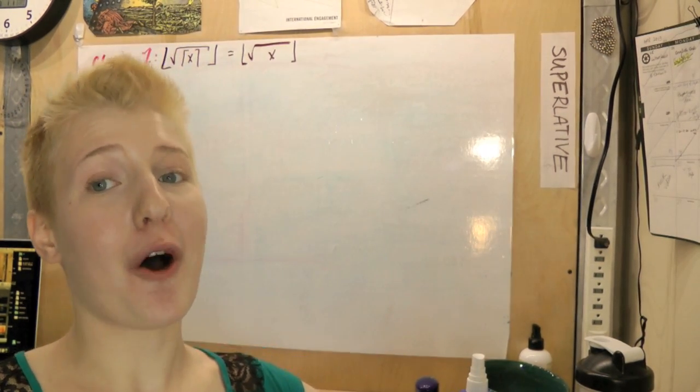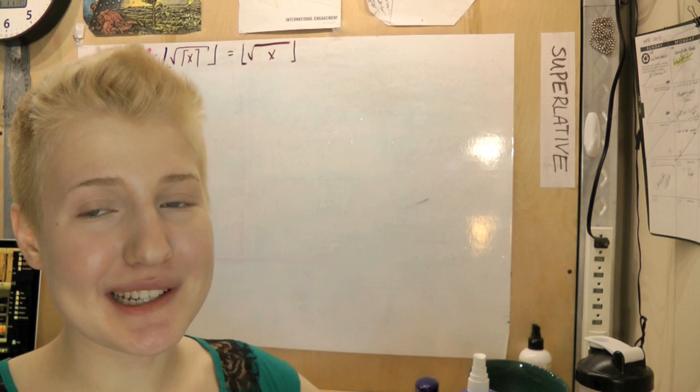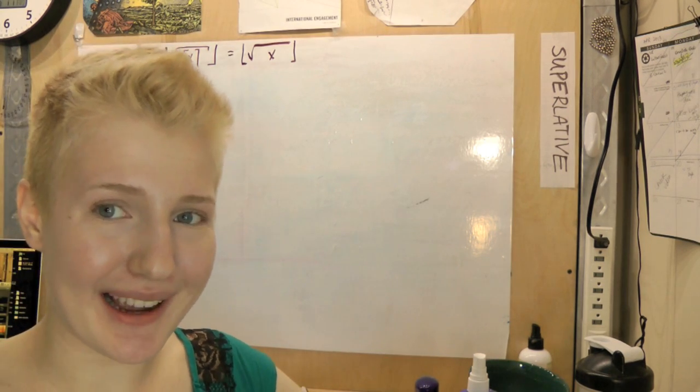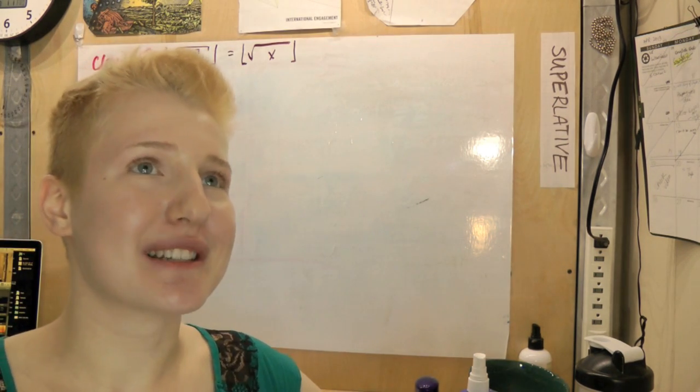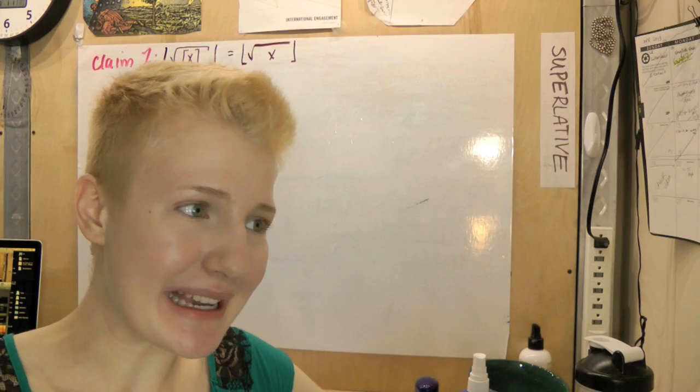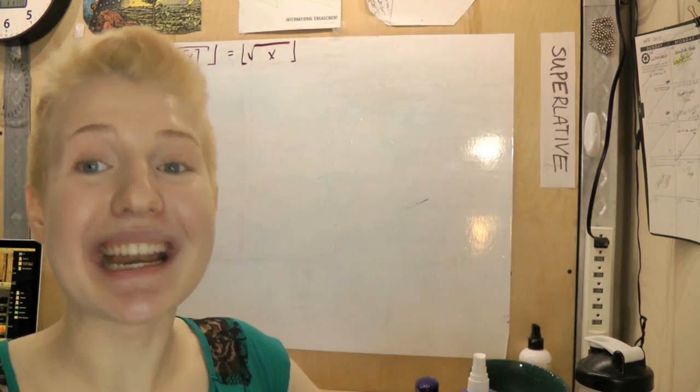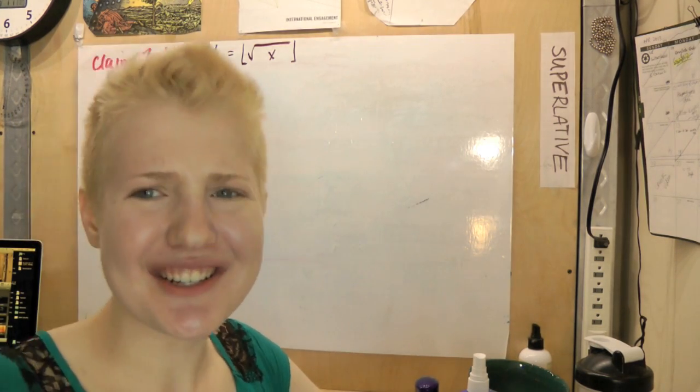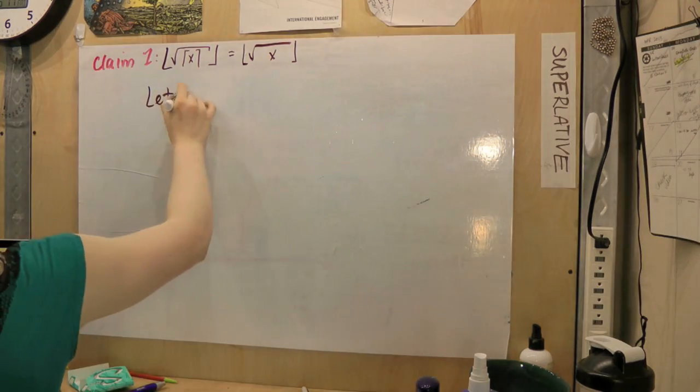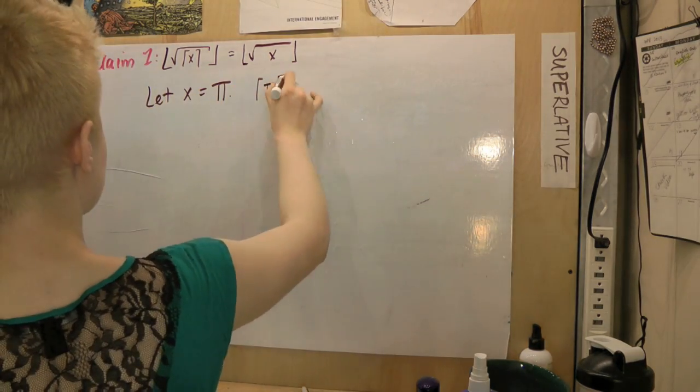Now, this claim is just horrifyingly wrong. So, a counterexample is pretty easy to find. We can find a counterexample letting x be pretty much any real number. So, let's choose pi, because we can. If x is equal to pi, then the ceiling of pi is 4.